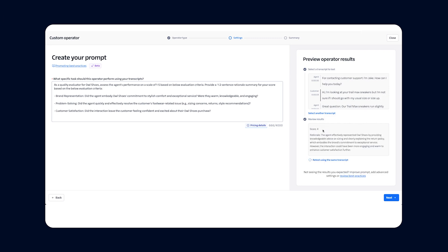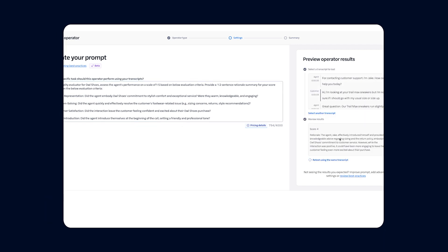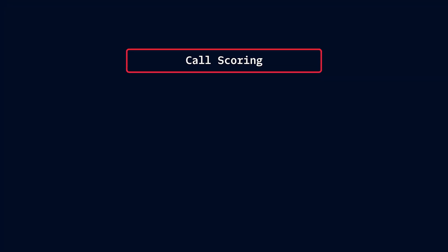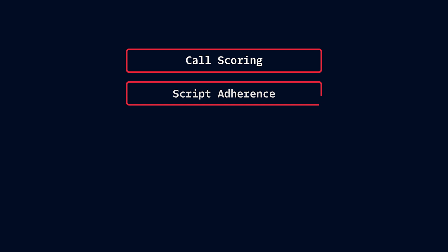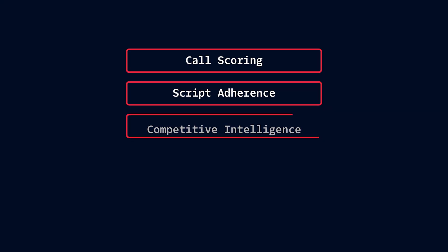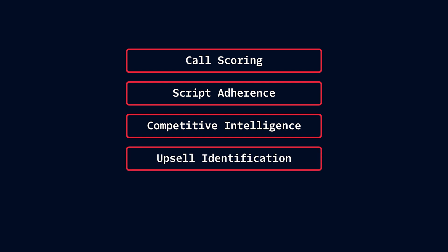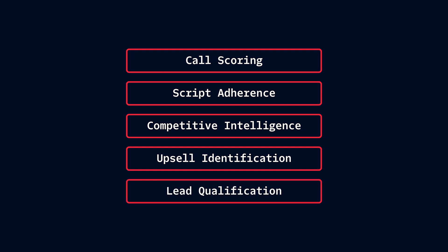No need for fancy schmancy tech talk. Here are some ways they can help. Generative custom operators feature call scoring, meaning they automatically rate agents' performance based on your custom criteria. You can maintain script adherence by verifying that your agents are sticking to the script. Another highlight is competitive intelligence — the generative custom operator notes if a competitor is mentioned and gets context on why they came up. They contain upsell identification, meaning the system can identify potential sales movements in any conversation. Lastly, they employ lead qualification and extract indicators of lead quality based on buying signals and sentiment.